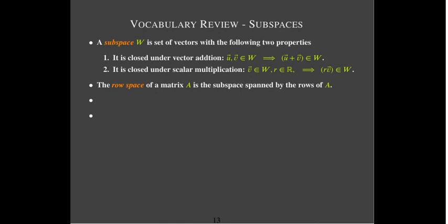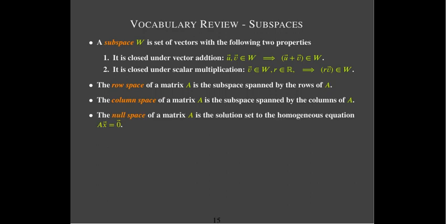Some spaces associated with matrices: we have the row space, which is the space spanned by the rows of A; the column space, which is the space spanned by the columns of A; and finally, the null space, which is the solution set of the homogeneous equation Ax equals 0 — the set of all vectors which get sent to 0 by the matrix A.